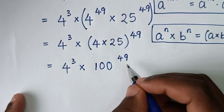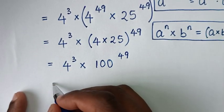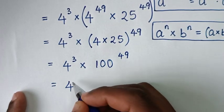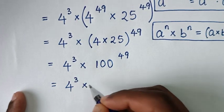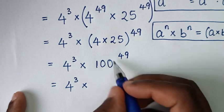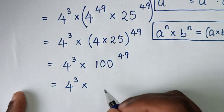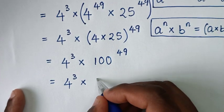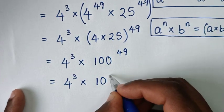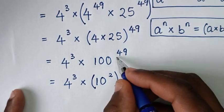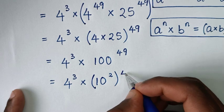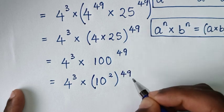Then it will be equal to 4 power of 3 times 100, and 100 is the same as 10 squared, then bracket to the power of 49.